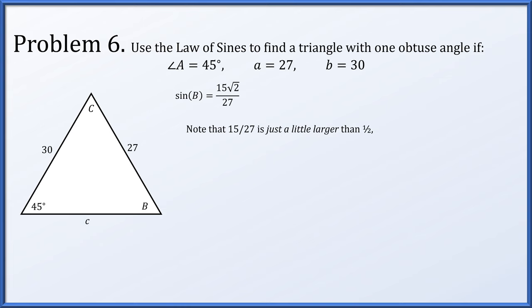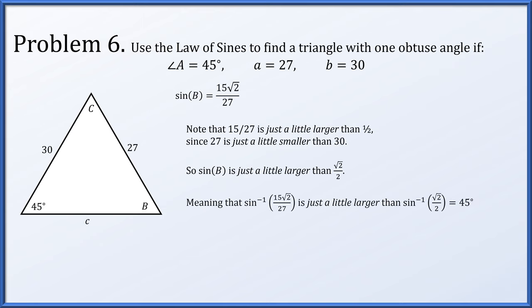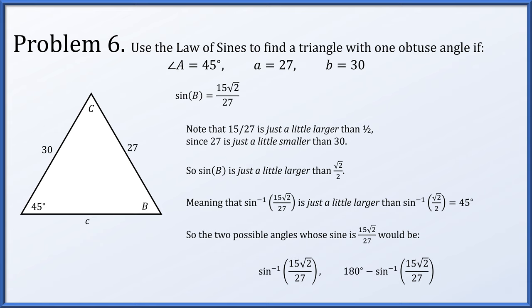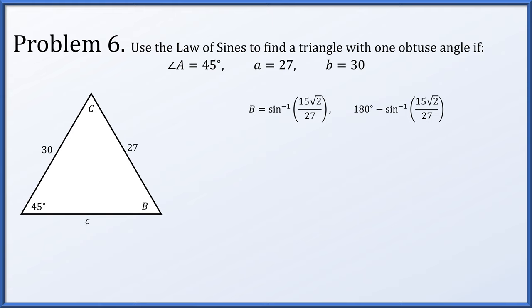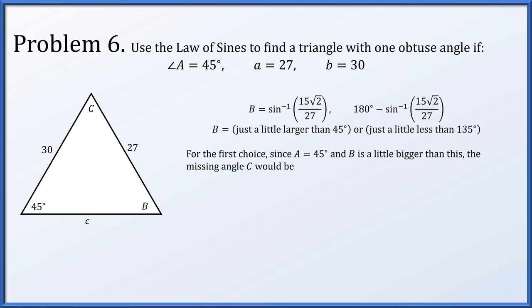Note that 15 over 27 is very slightly larger than a half — because 15 over 30 would be exactly a half, and making the denominator smaller to 27 makes the quantity a little bigger. So sine of B is a little bit bigger than root 2 over 2, meaning the arcsine of 15 root 2 over 27 is just a little bit bigger than 45 degrees. The two possible angles whose sine is 15 root 2 over 27 are: the quadrant 1 solution, just over 45 degrees, and the quadrant 2 solution, 180 degrees minus that — a little bit less than 135 degrees.